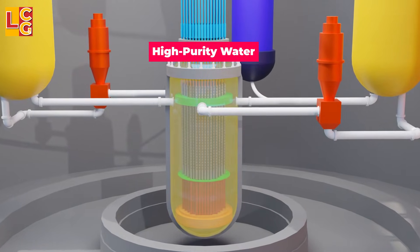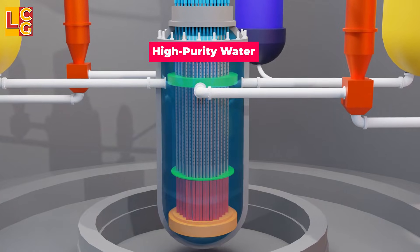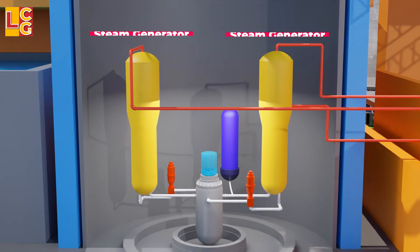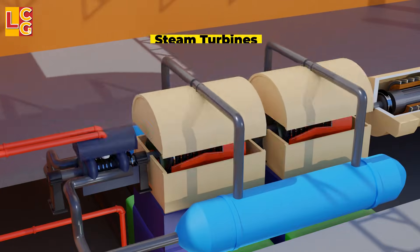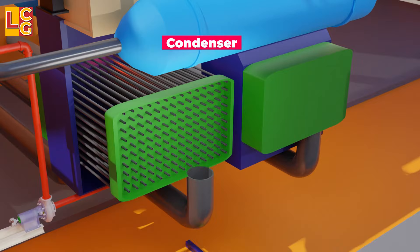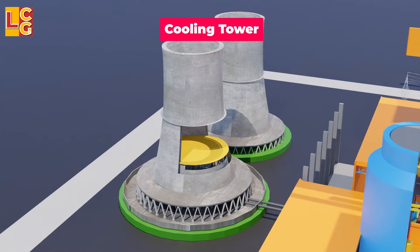The other parts of the plant are the pressurizer, steam generator, steam turbine, generator, condenser, cooling tower, and substation and power lines.